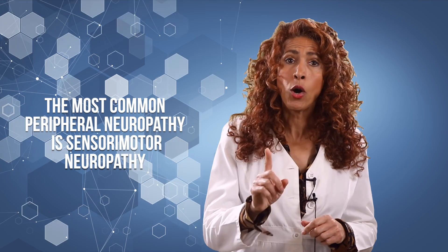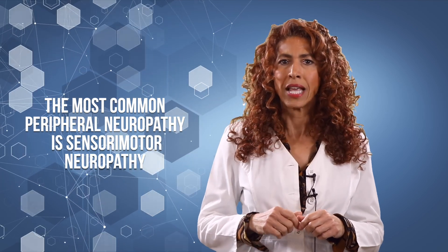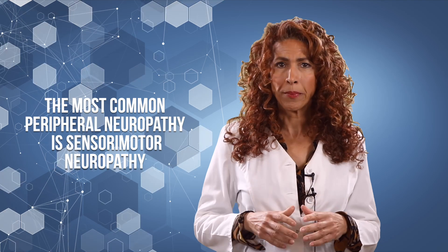With peripheral neuropathy, I mentioned that the nerve damage can affect the motor, sensory or autonomic nerves. But the most common nerve damage we see affects both the motor and sensory nerves. And that's why it's called sensory motor neuropathy.